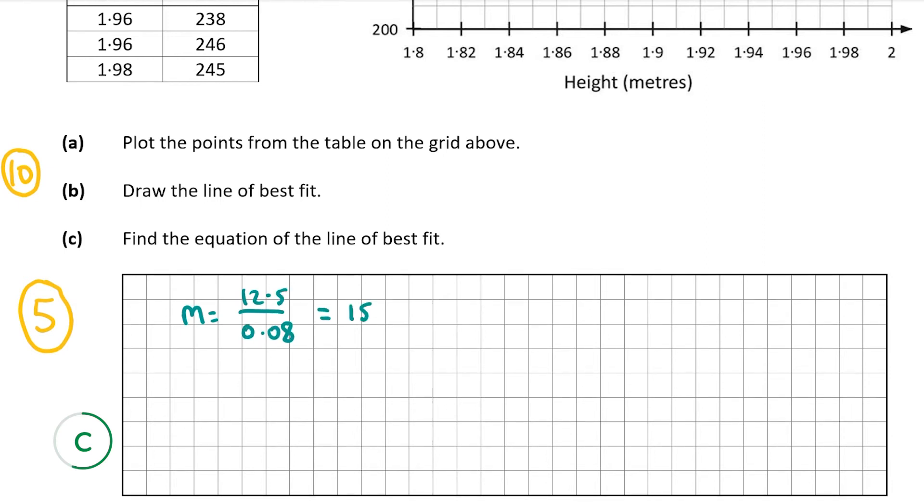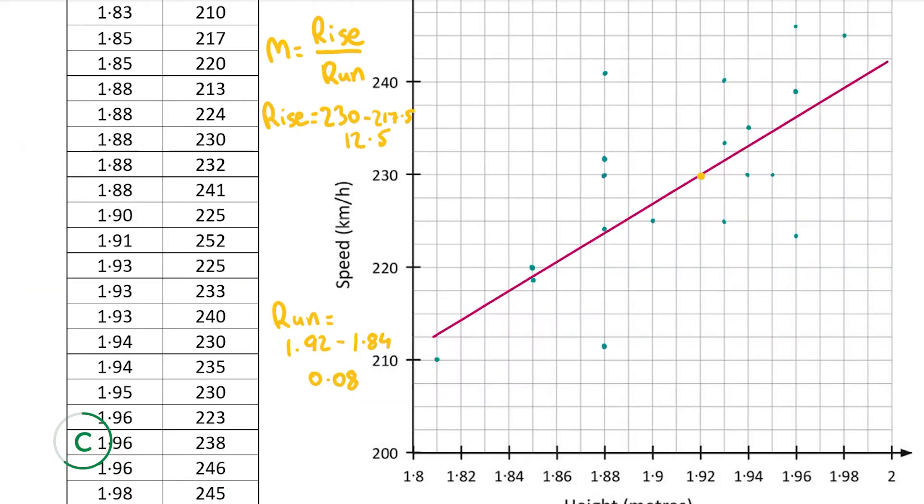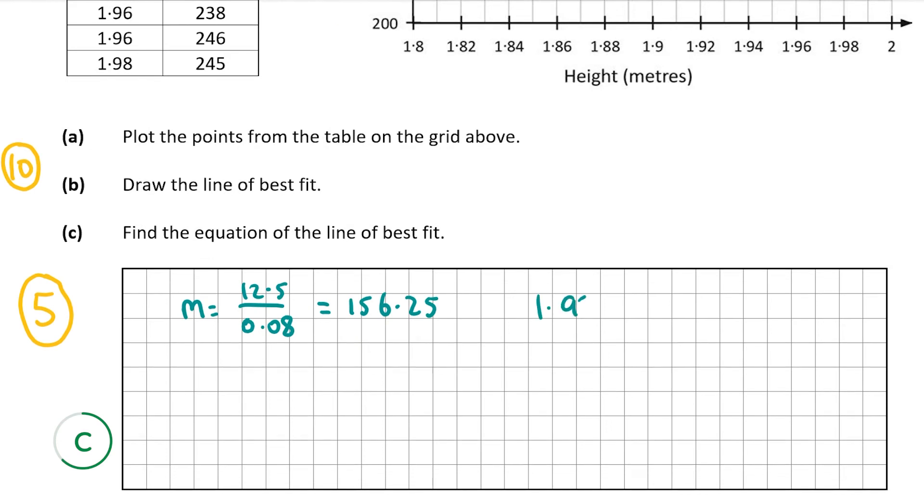So now let's put 12.5 over 0.08, that's equal to 156.25. So now all I'm going to do is pick a coordinate on the line and I'm going to pick this yellow coordinate here that I already had marked and that's the coordinate 1.92, 230. So my m is going to be 156.25, my x1 will be 1.92, and my y1 will be 230.